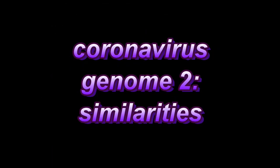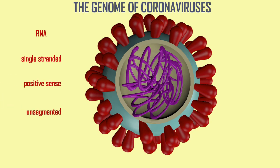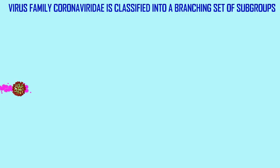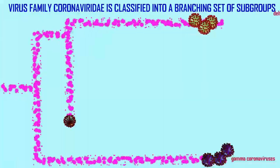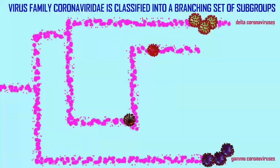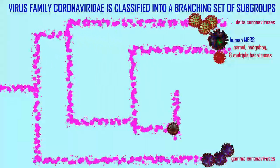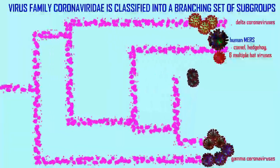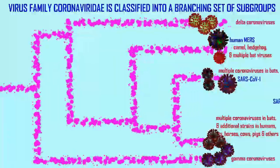The viruses in the virus family Coronaviridae are similar, which is why they are classified together in the same family. They are all single-stranded RNA viruses. Their genomes are all about 30,000 nucleotides long, or 30 kilobases long. There is some variation, so the smallest may be 26 kilobases and the largest 34, but they all have comparable genome sizes.